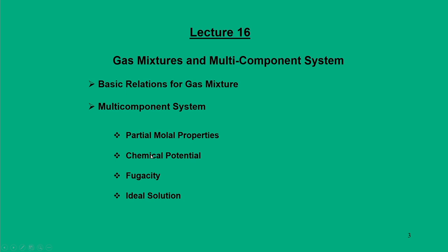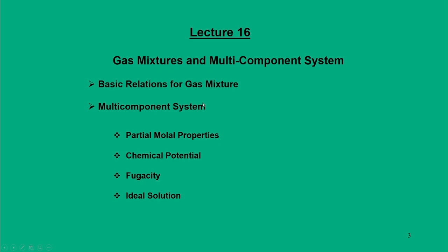That is the advantage when dealing with multi-component systems — it is better to use molar properties. For that, these four parameters are of importance: partial molar properties, chemical potential, fugacity, and ideal solutions. Ideal solution is another model of gas mixtures. Normally when we have liquid and gas together we say it is a solution, and some relations suitable for ideal solutions also give good estimates for gas mixtures.